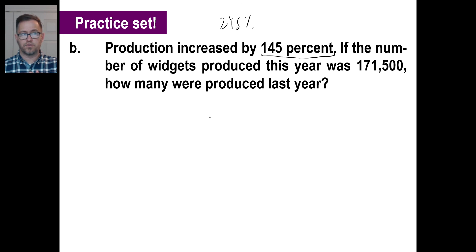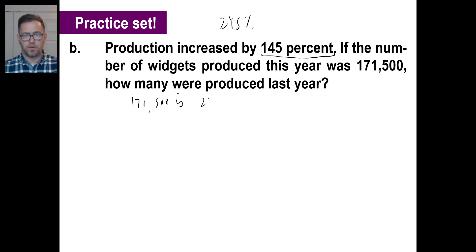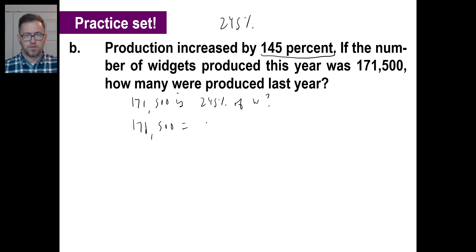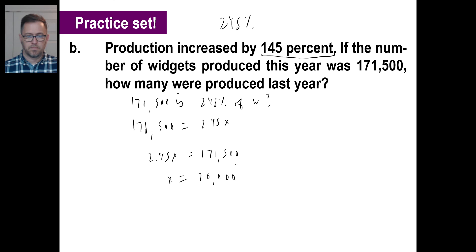How many were produced last year? Here's the question: 171,500 is 245% of what? We make it into an equation: 171,500 = 2.45 times X. Solving that, the answer is 70,000.